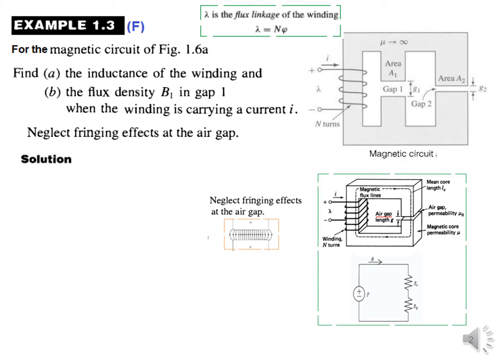Now, if it was a circuit without infinite permeability, then we would have to consider two reluctances: one for the core material and the other for the gap. But since in this case the reluctance due to core is zero because of infinite permeability, therefore we'll just have one reluctance due to the air gap. So in our circuit there are two gaps.